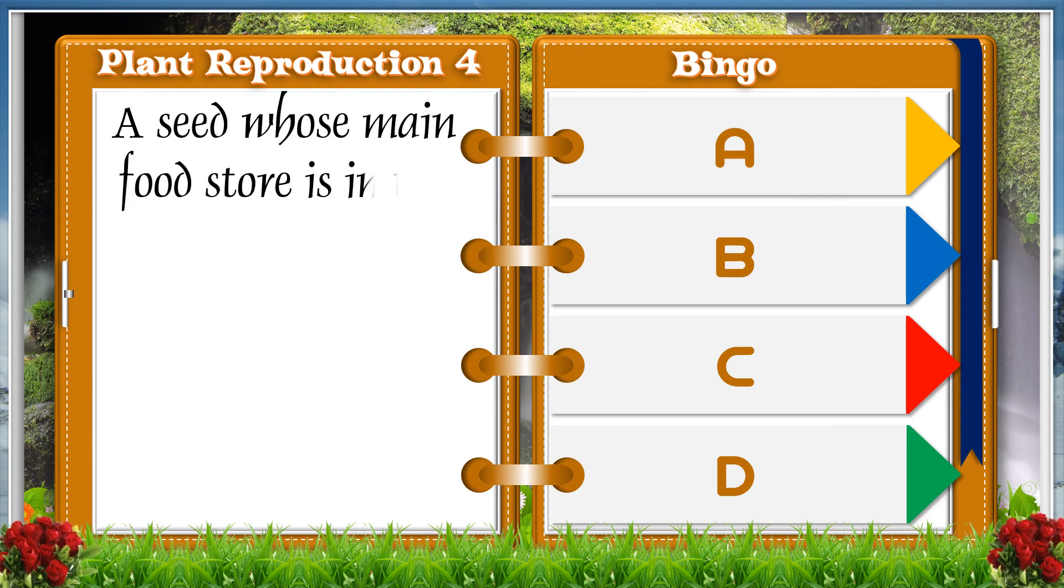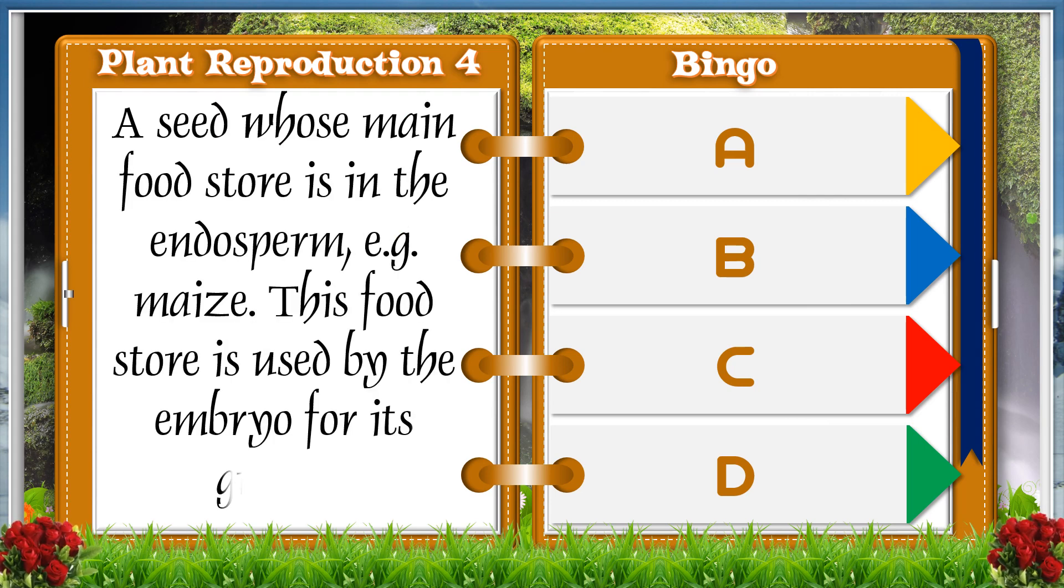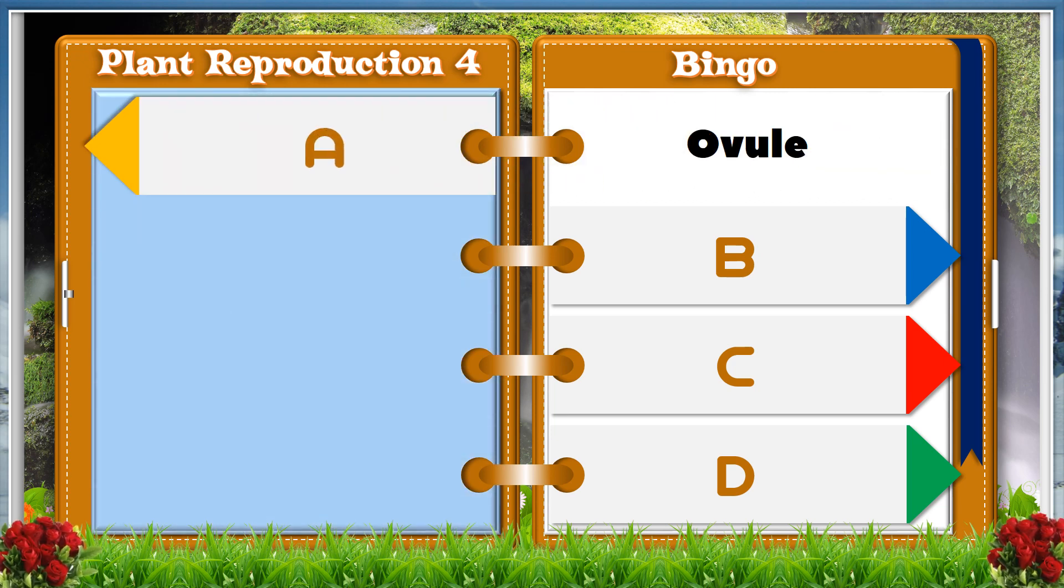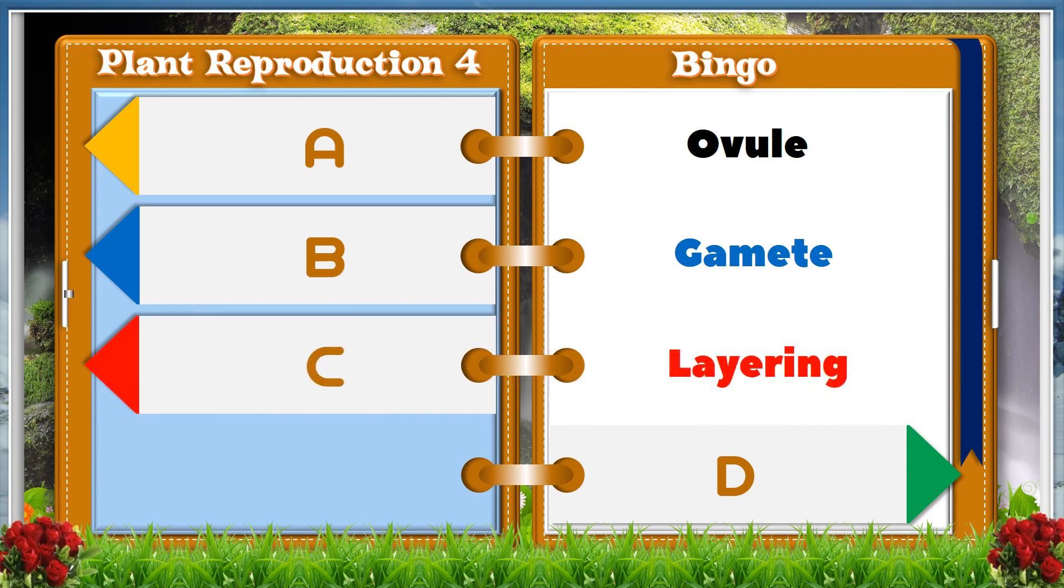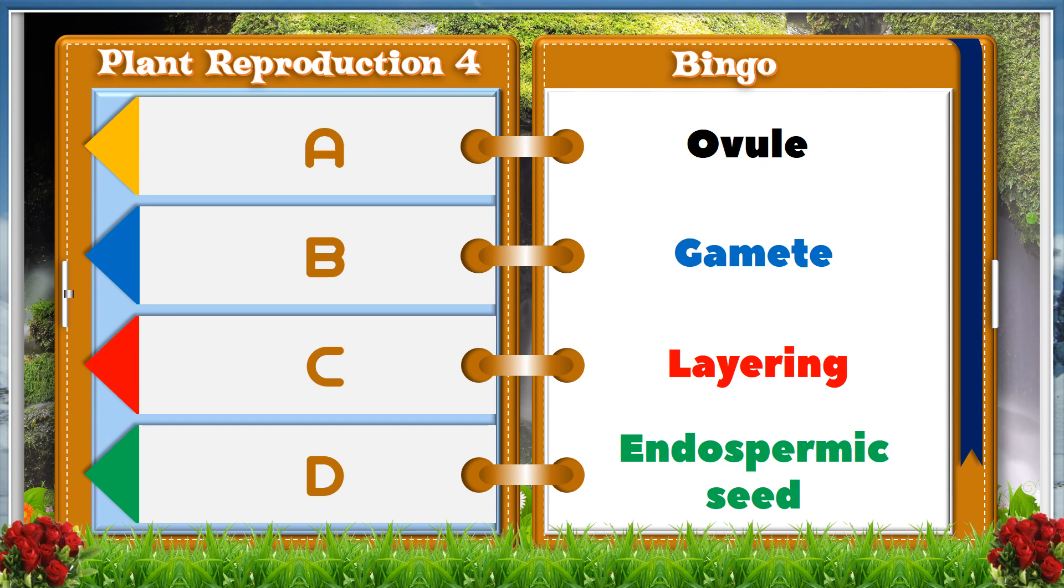A seed whose main food store is in the endosperm, for example, maize. This food store is used by the embryo for its growth. A. Ovule. B. Gamete. C. Layering. D. Endospermic seed. And the answer is D, Endospermic seed.